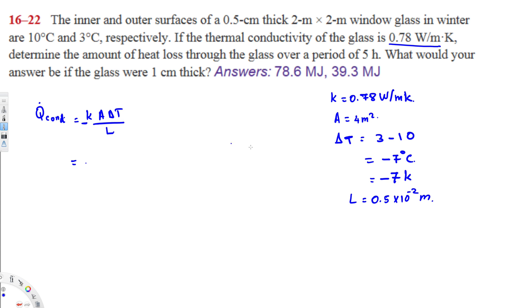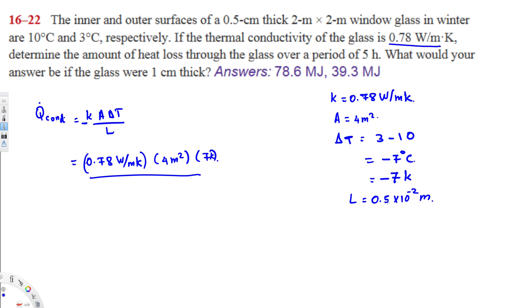Plugging in all values: Q̇ = 0.78 (W/m·K) × 4 m² × 7 K / (0.5 × 10⁻² m). The two negatives cancel to give a positive result. Checking units: m² cancels with m in the denominator, and Kelvin cancels, leaving watts — which equals joules per second, as expected for a heat transfer rate.